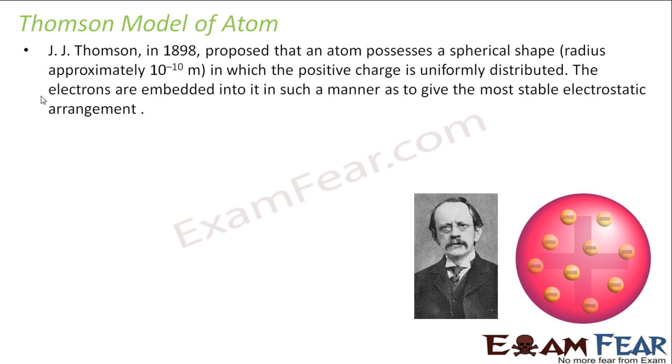So in 1898, the electron was discovered. It was pretty clear that we have something called electron and we have some positive charge, which we didn't know at that time. The proton was not there. But there was some positive charge and some electrons because electrons were discovered. And since the whole atom is neutral, there has to be some positive charge.